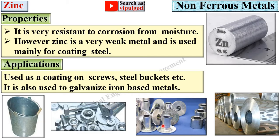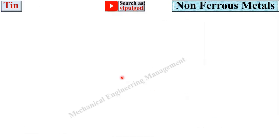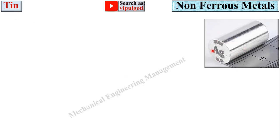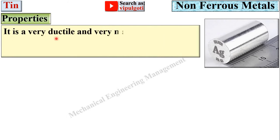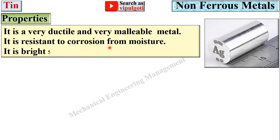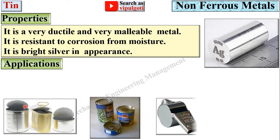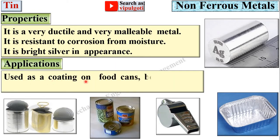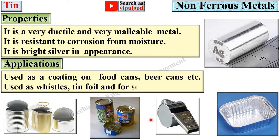Here you can see the coating by zinc on different materials. Now for tin: it is very ductile and malleable, resistant to corrosion from moisture, and bright silver in appearance. Applications: used as a coating on food cans and beer cans, as vessels, tin foil, and for soldering.